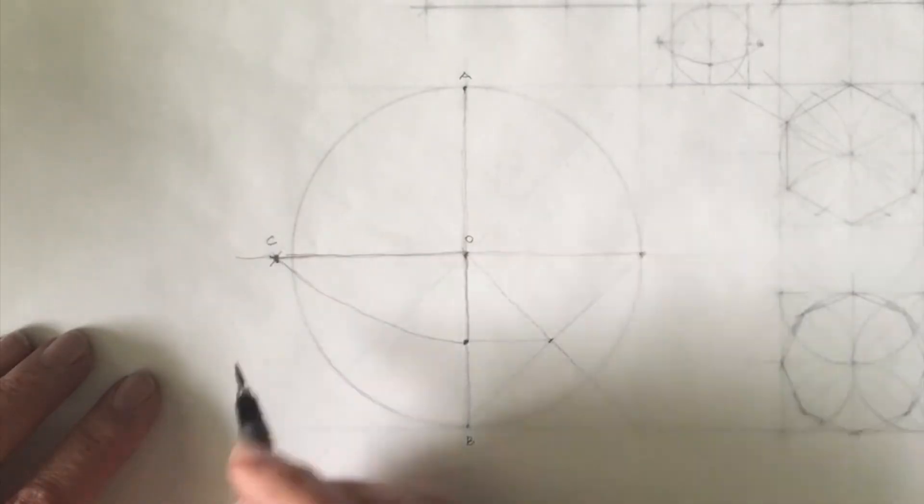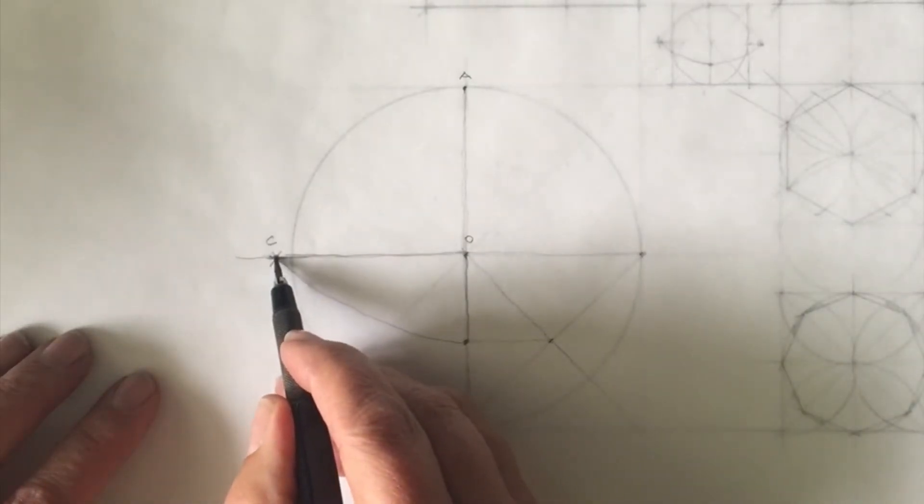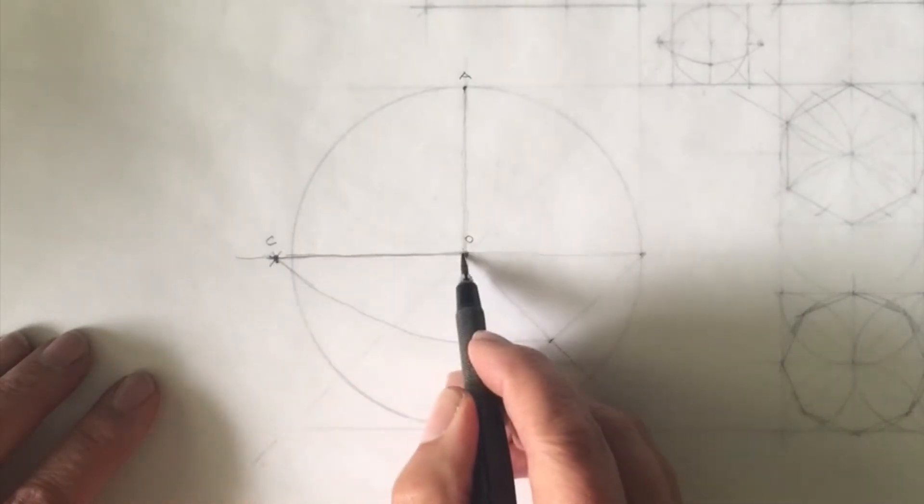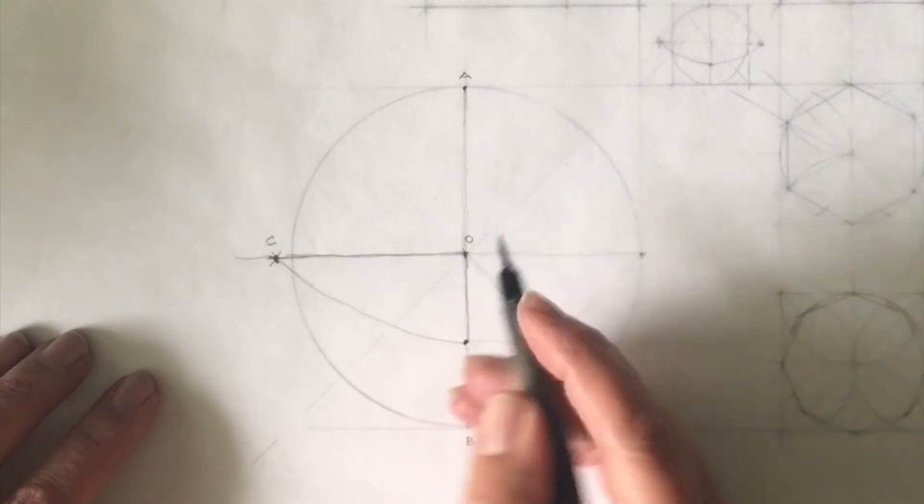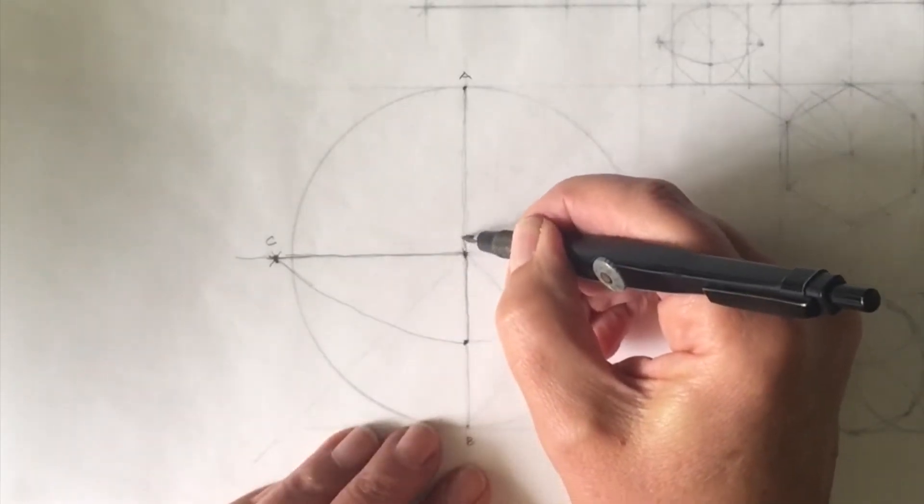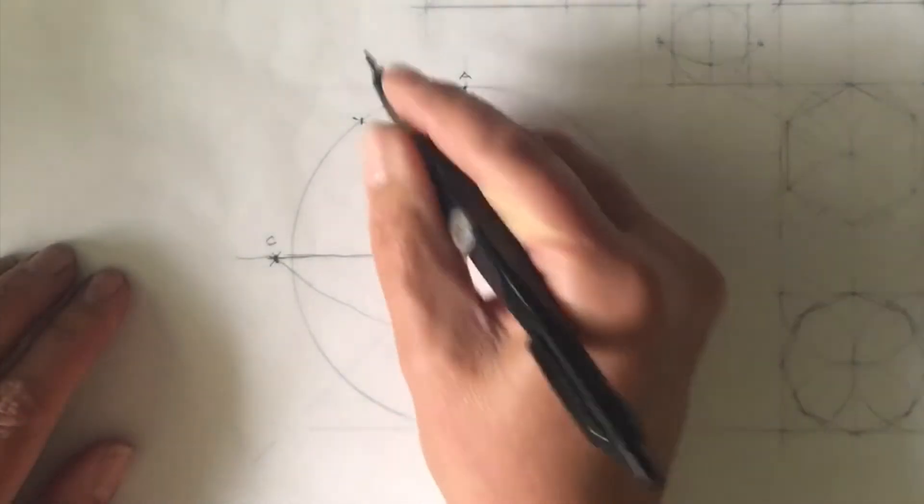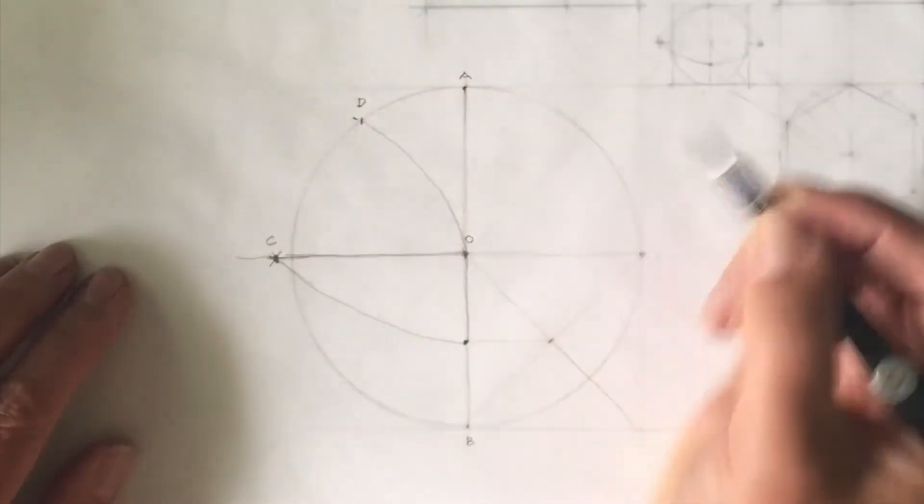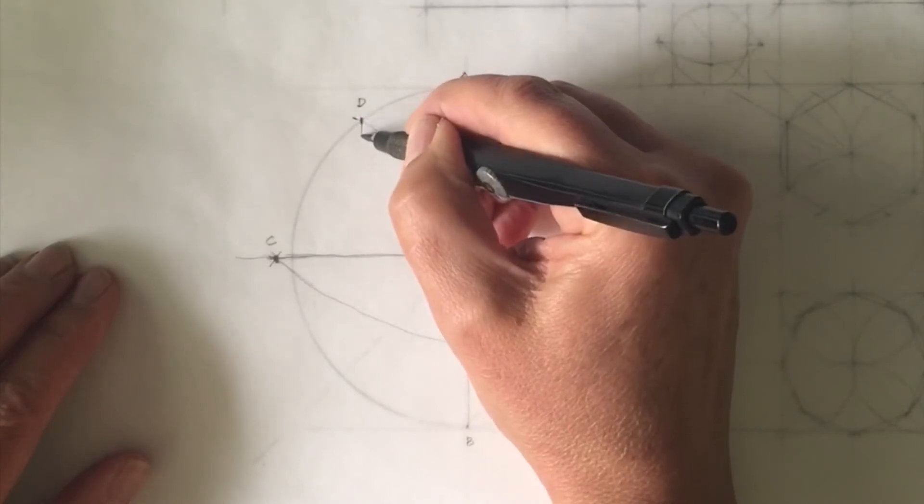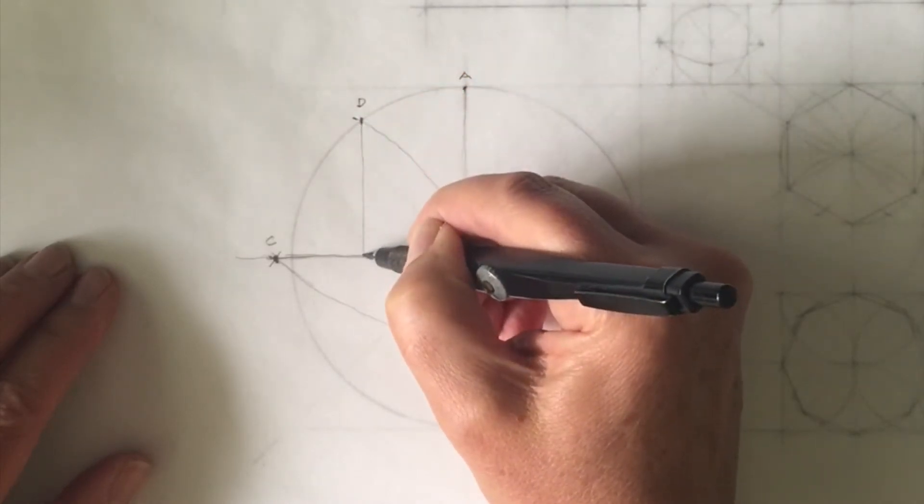So point C is very important and I'm going to now take my compass point, plunk it here and stretch out the compass point to this radius right here and it's going to be arced and it's going to hit the circle right there. So we're going to call that D.